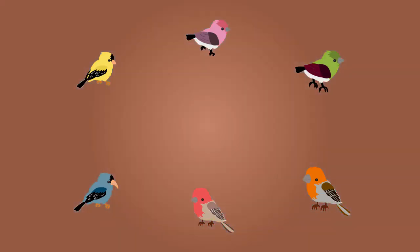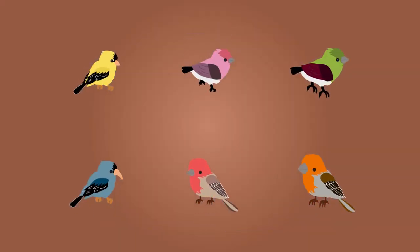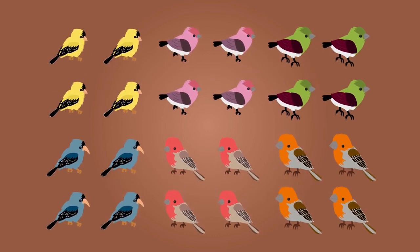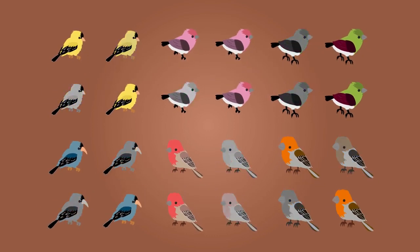Darwin proposed that the variations seen both within and between the finch species arose by chance. Variations which gave any individual a competitive advantage made them more likely to survive and therefore reproduce, out-competing those with less advantageous characteristics.